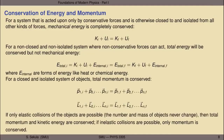For a closed and isolated system, total momentum — both linear and angular — is conserved. If only elastic collisions are possible where the number and mass of objects never changes, then total momentum and kinetic energy are both conserved. If inelastic collisions are possible, where objects can stick together or gain or lose mass, then only momentum is conserved. You have to be careful about how closed and isolated the system truly is.